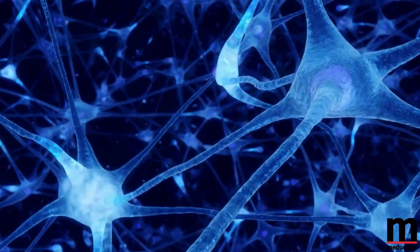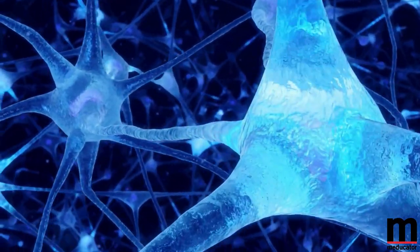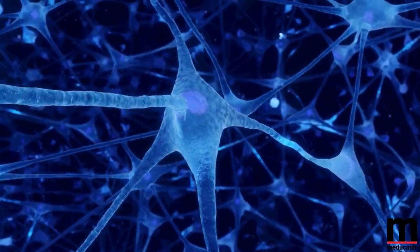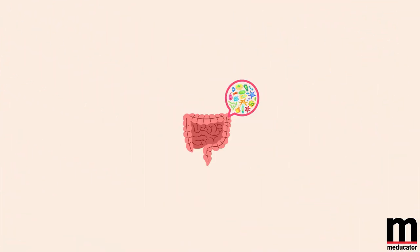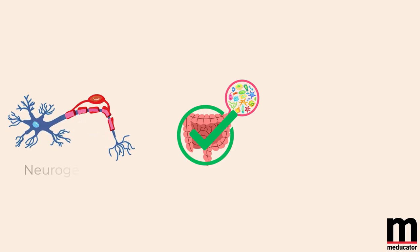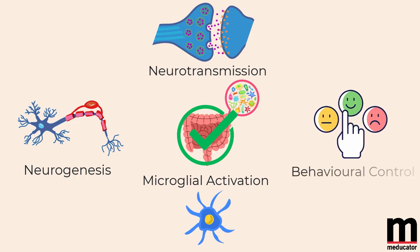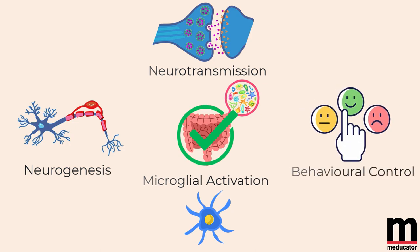Studies have shown that bacteria in the gastrointestinal tract can activate neural pathways and central nervous signaling systems. A healthy gut microflora transmits brain signals through various pathways such as those involved in neurogenesis, neural transmission, microglial activation, and behavioral control under stable or stressful conditions.